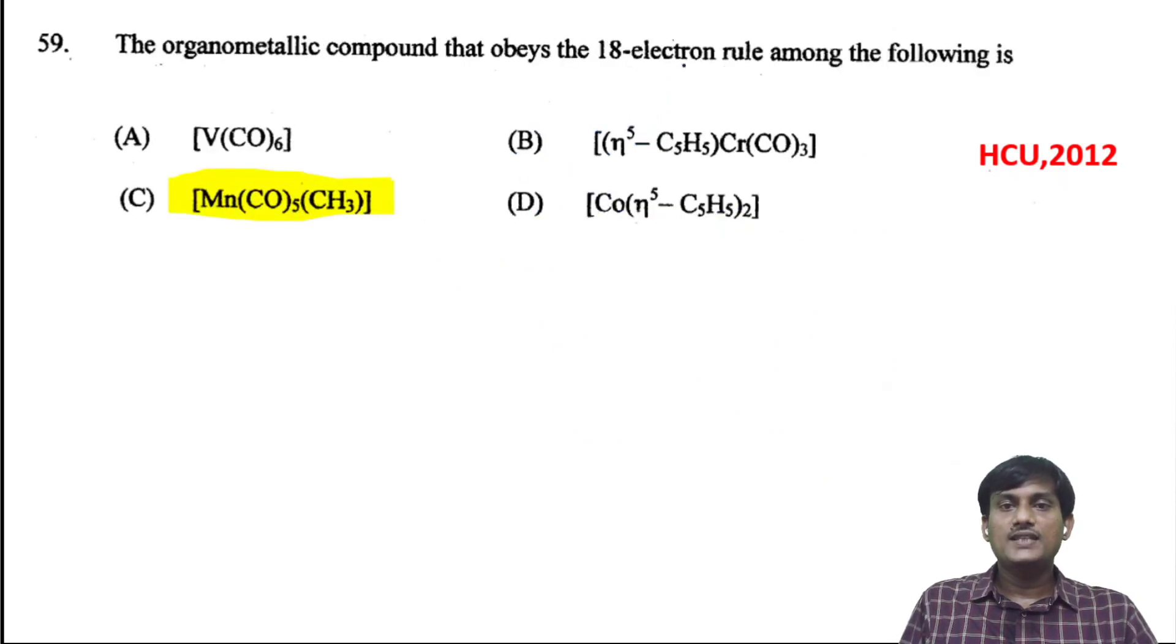The organometallic compound that obeys the 18-electron rule among the following. Let's check V(CO)6: vanadium has 5 electrons plus 6×2 equals 12, giving 17 electrons total. For the second option with Cr, chromium +1 has d^5 configuration, so 5 electrons from chromium. C5H5^- donates 6 electrons, and 3 CO groups donate 6 more electrons. That's 5+6+6=17 electrons.